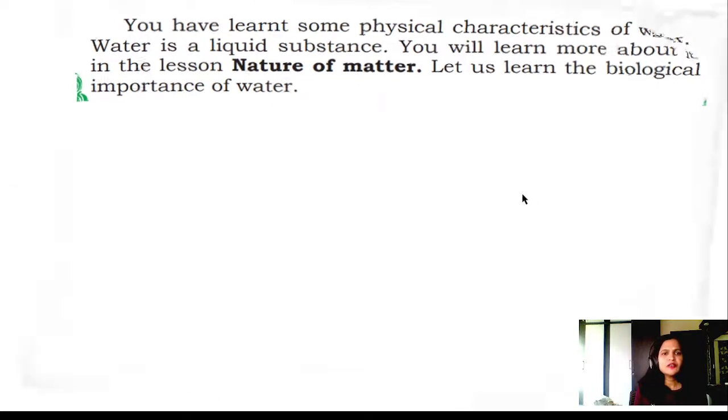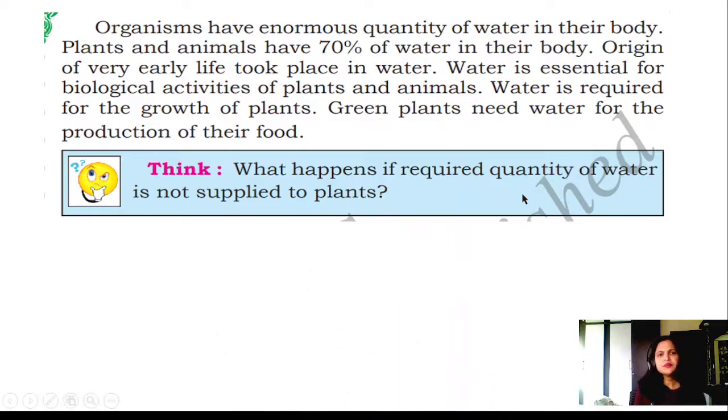Let us learn the biological importance of water. Organisms have an enormous quantity of water in their body. Plants and animals have 70% of water in their body. Origin of every early life took place in water. Water is essential for the biological activities of plants and animals. Water is required for the growth of plants. Green plants need water for the production of their food. Think: What happens if the required quantity of water is not supplied to plants? Plants will die.